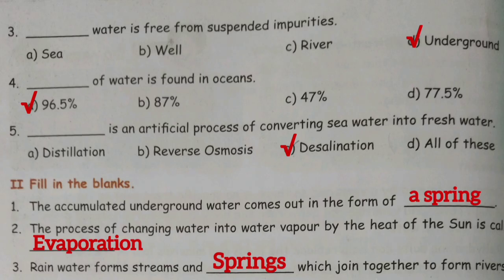Second one: the process of changing water into water vapour by the heat of the sun is called — answer: evaporation.